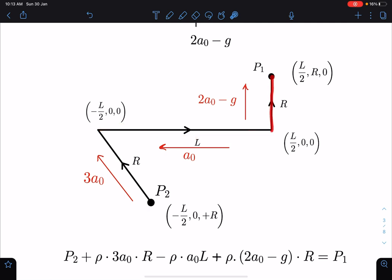So suppose here pressure is P₂ + ρgh, where g is basically 3a₀, so ρ·3a₀ and this height is R. And now it will decrease here, so decrease by ρ·a₀·L, and further it is going to increase and it will be ρ(2a₀ - g)·R,